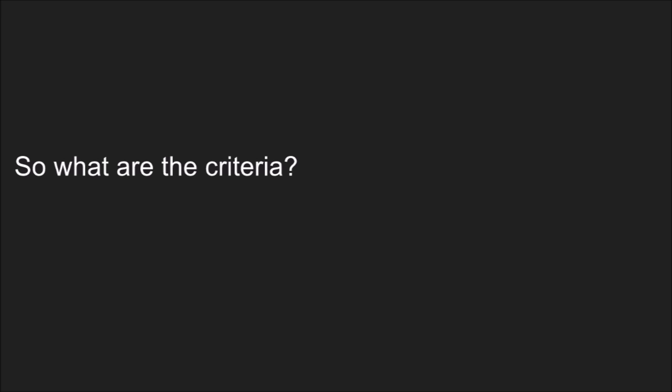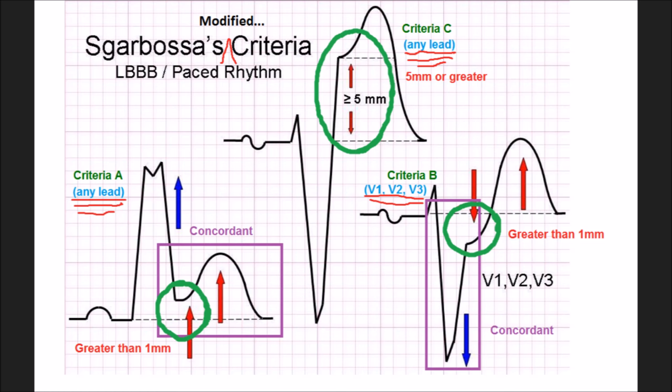So what are those criteria? Three simple criteria. The first criteria is ST elevation greater than one millimeter in any lead — concordant ST elevation, as you see in the lower left hand corner. The next criteria, in the lower right hand corner, is ST depression which is concordant greater than one millimeter in V1, V2, or V3 only. And these don't necessarily have to follow in the whole contiguous leads pattern like regular STEMIs do.